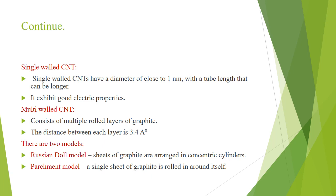So there is some difference in single-walled and multi-walled carbon nanotube. In single-walled nanotube, as I already told, its diameter is close to 1 nanometer or 1.5 nanometer and it acts with good electrical properties. Multi-walled carbon nanotube consists of multiple rolled layers of graphite. The distance between two layers is around 3.4 angstrom. It depends upon the synthesis.